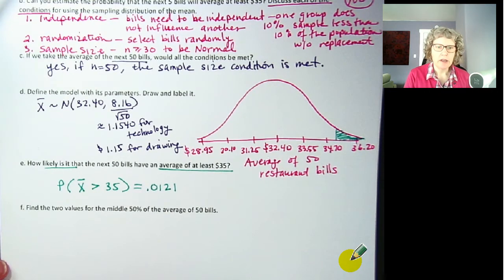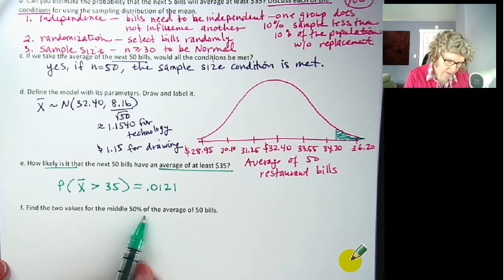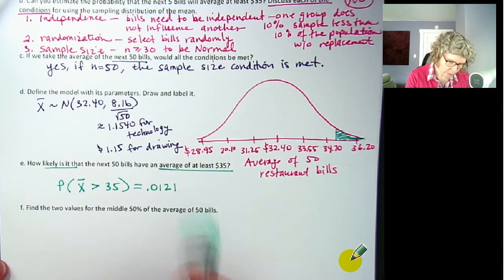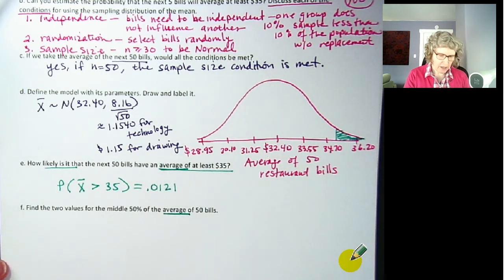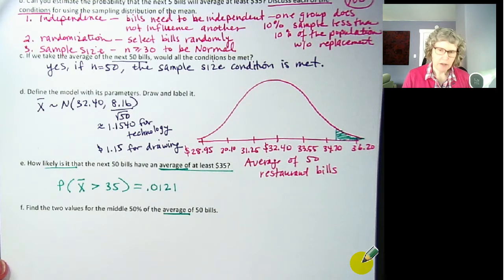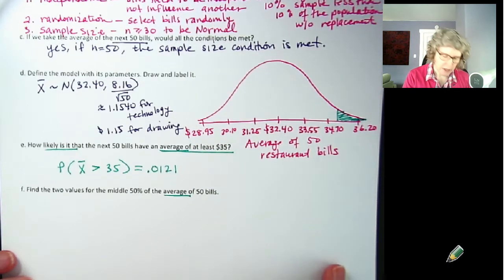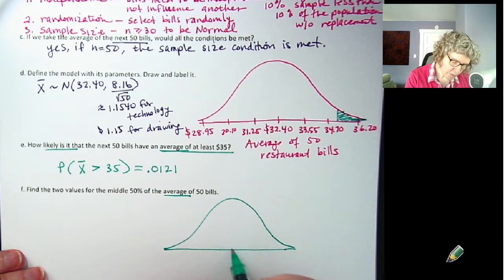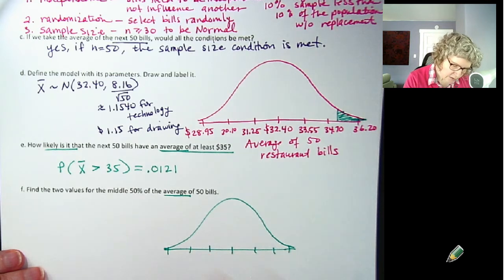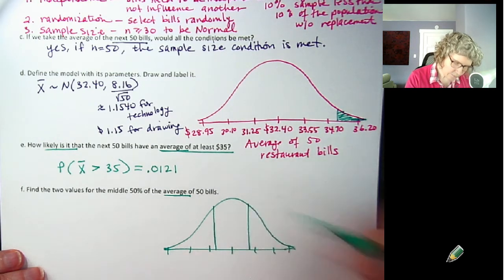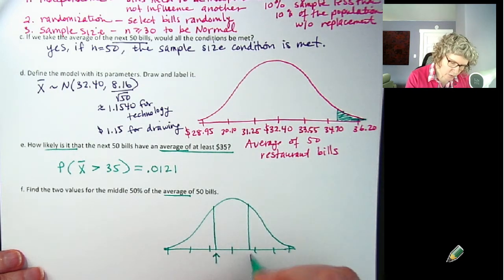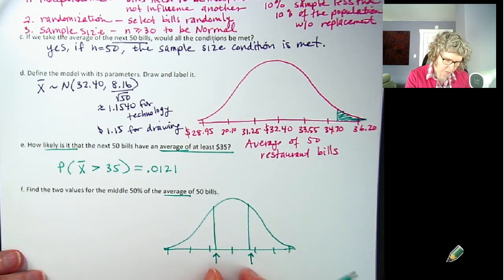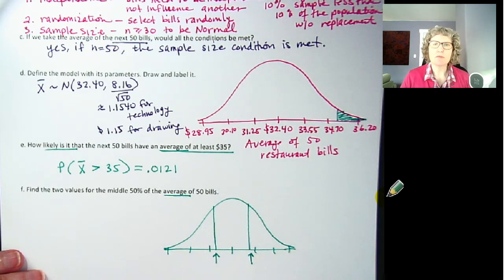Another question we could answer is find the two values for the middle 50% of the average of 50 bills. So remember, whenever you see this word average, that's when you use the sampling distribution. I've already drawn it once. If you've already drawn it once, you don't have to draw it again. You can copy and paste multiple from technology if you want to. But if you're hand drawing, just make a sketch for any ones after that. So I'm just going to draw the middle 50% here, which we know 1, 2, 3, 1, 2, 3. We know this is 68 from the empirical rule. So I know it's a little bit inside of that. So we're looking for what two dollar values represent the middle 50% or between those two values or the middle 50% of these averages of these random samples.